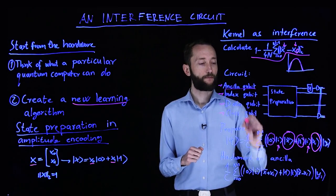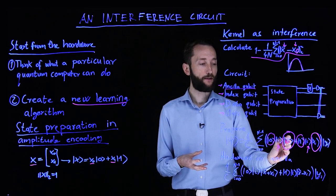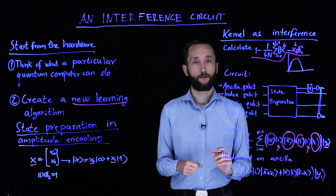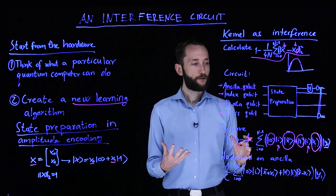And then we have the ancillor qubit. So the zero state of the ancillor qubit is entangled with the test instance. And the excited state, the one state of the ancillor, is entangled with our data instances.